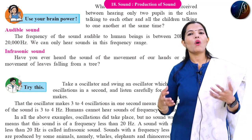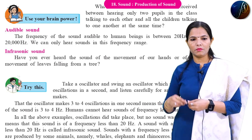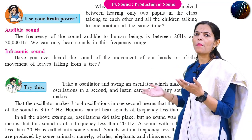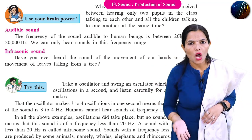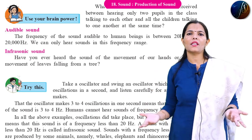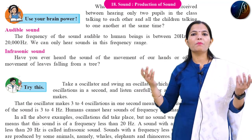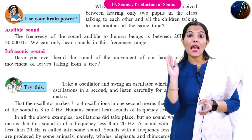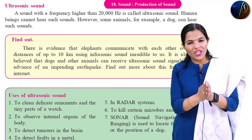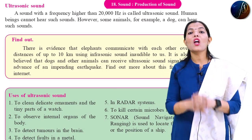Examples of audible sound come from our daily life. There is TV sound, mobile sound, and the chirping and sounds of different types of birds and animals. All of these fall within the audible frequency range of 20 Hz to 20,000 Hz.